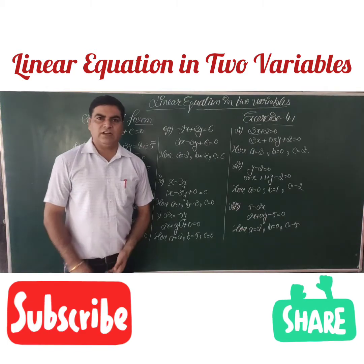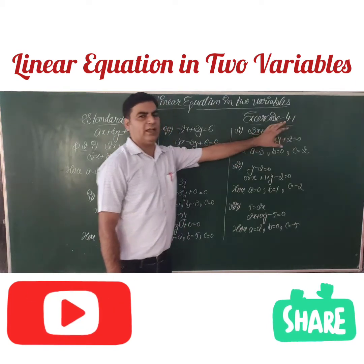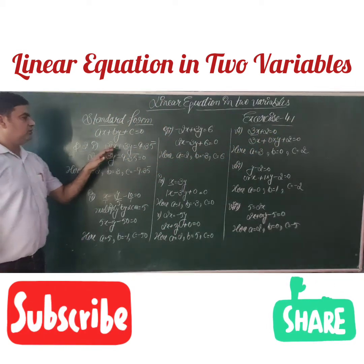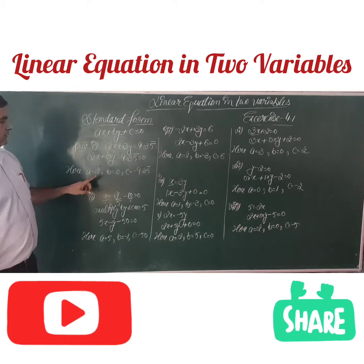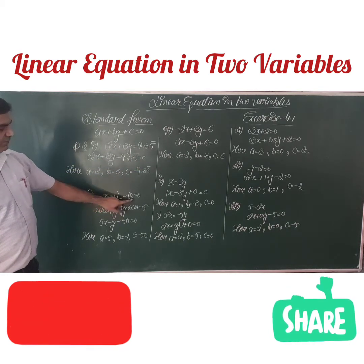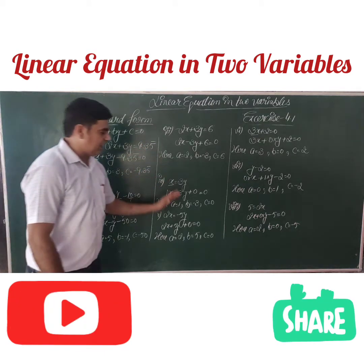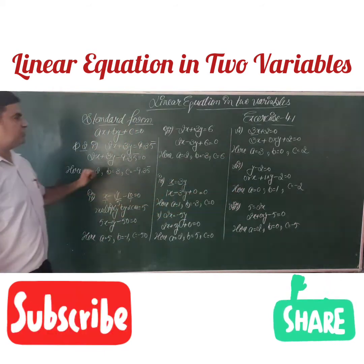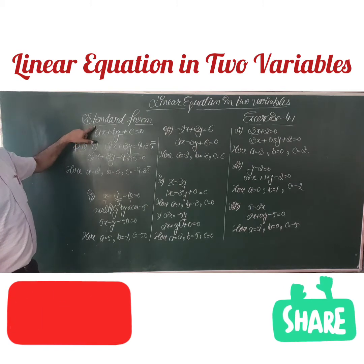Now we are going to start Question Number 2 of Exercise 4.1. We are given several sub-parts such as 2x plus 3y, and x over 5 minus y over 5 minus 10 equals 0. We need to write all of them in standard form.